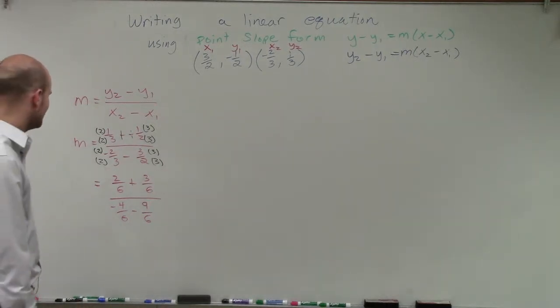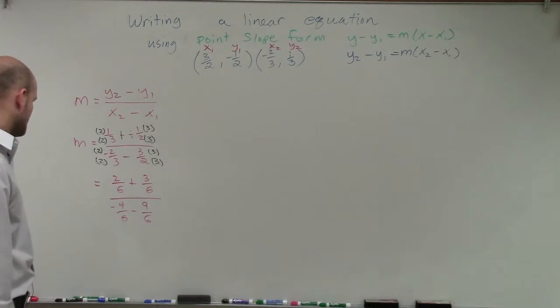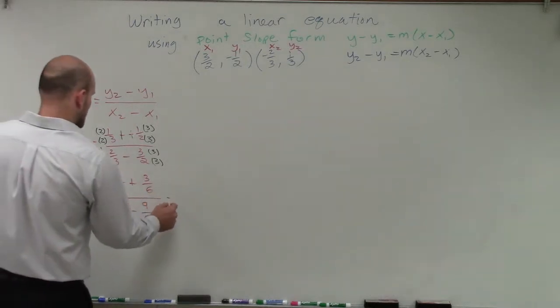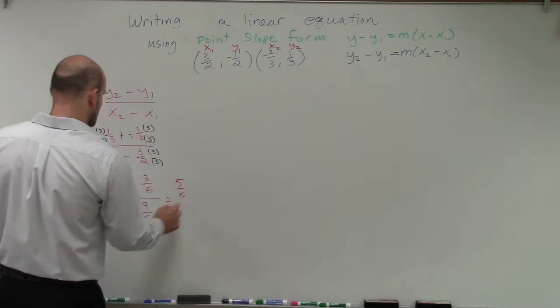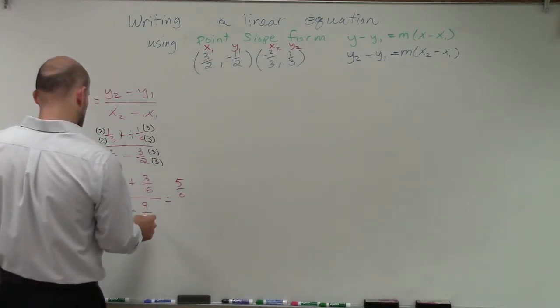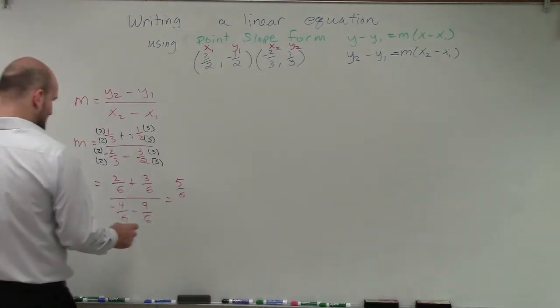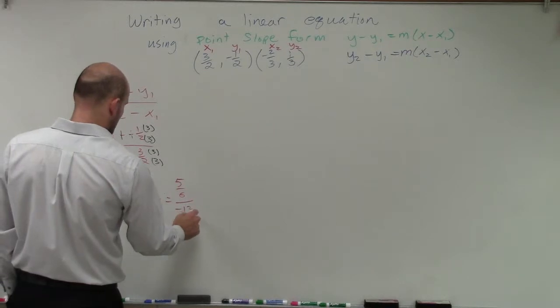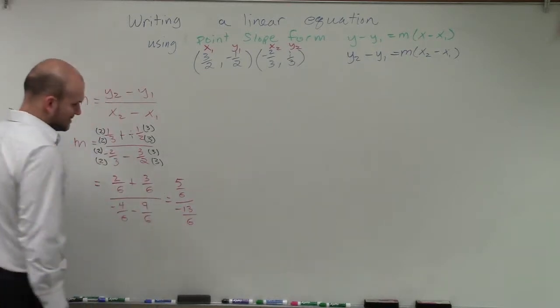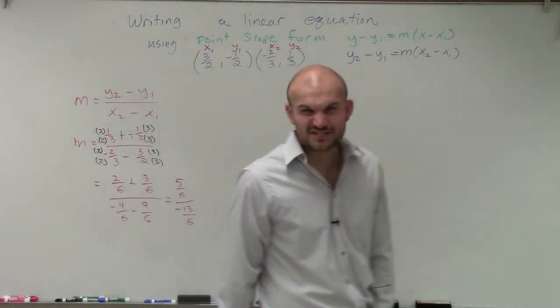Yay. Alright, looking good. So now I can add these up. So therefore we have 5/6 over, that's going to be a negative 13/6. So that's a pretty crazy fraction, right, for our slope.